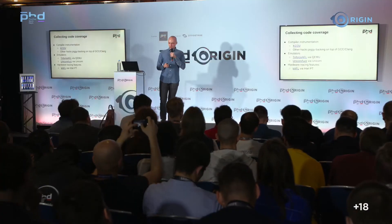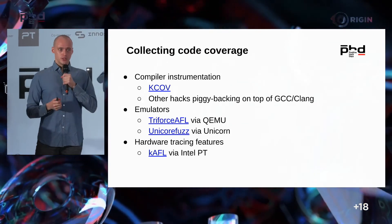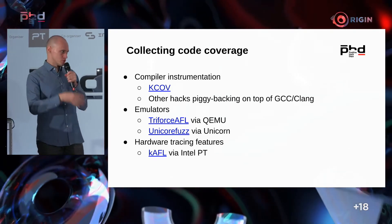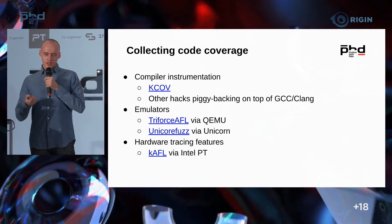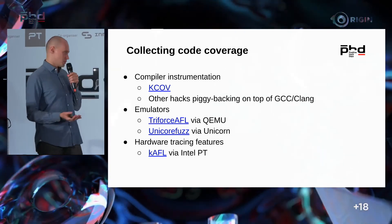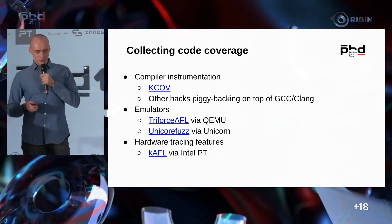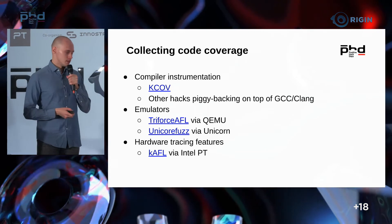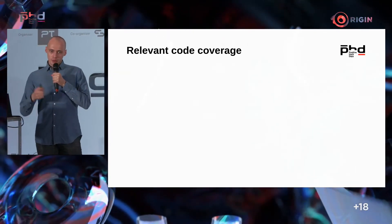How do we collect coverage other than using KCOV? First, you can use emulators or VMs — imagine your VM emulates the kernel instruction by instruction, and you hook into this process and collect instructions. These approaches exist and are useful because they don't need source code, unlike KCOV. There are also approaches using hardware tracing features. However, none of these fit very well into real-life engineering use — they are mostly research.